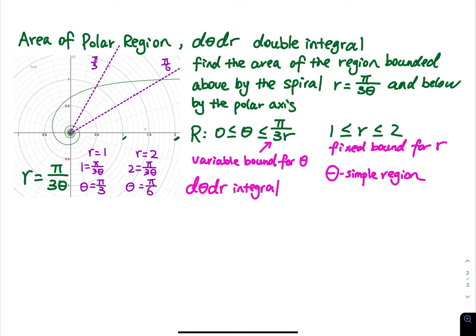This problem is a theta-simple region, which is why we use a d-theta dr integral. In the previous video I made an example where theta was fixed but r was changing — that was an r-simple region, and I used a dr d-theta integral. This one is d-theta dr.